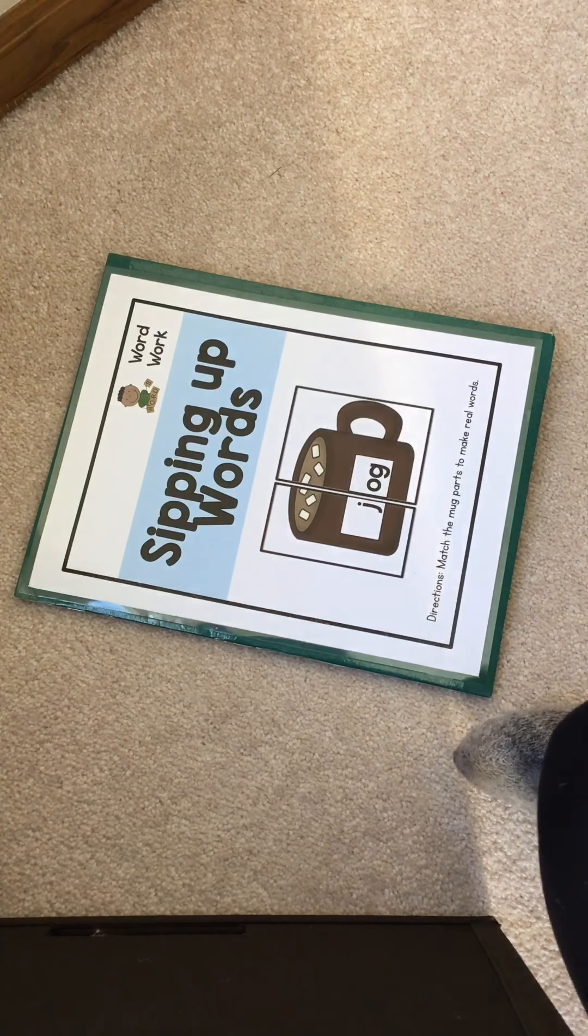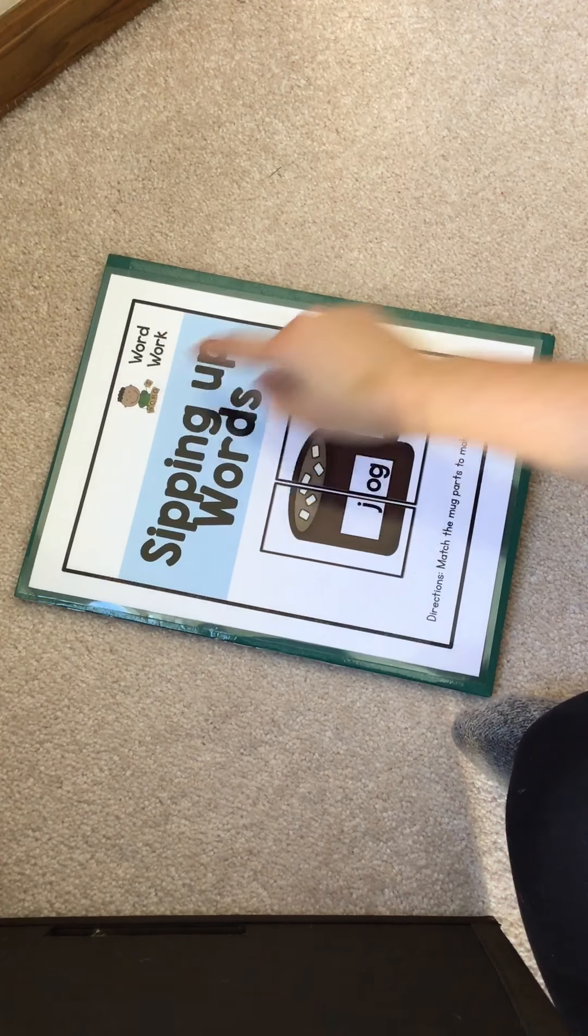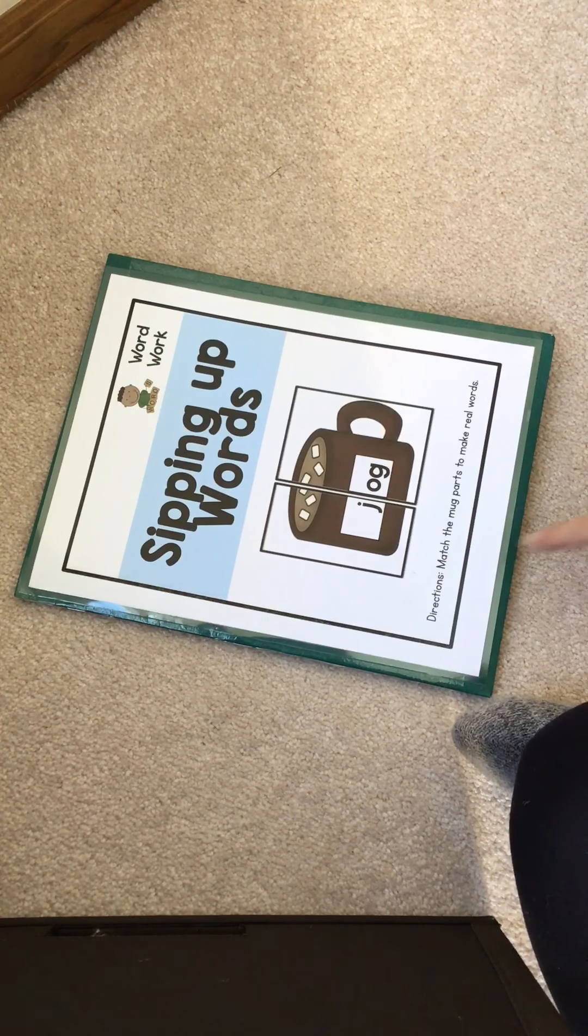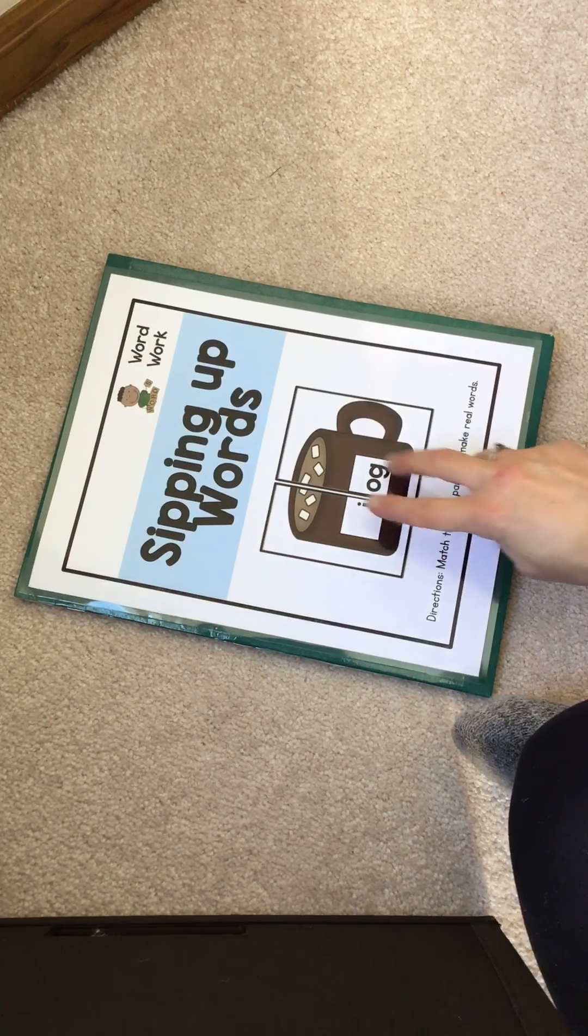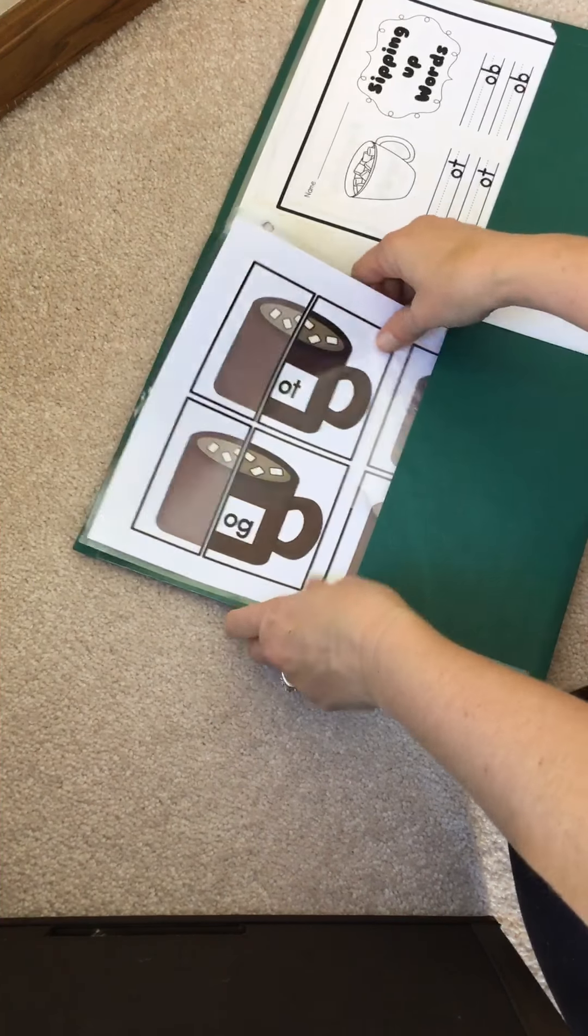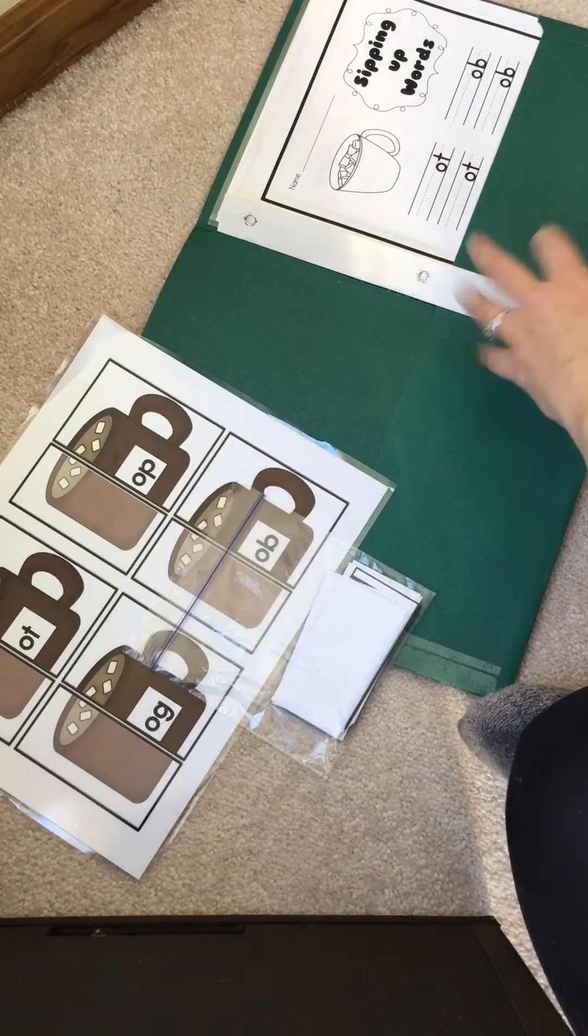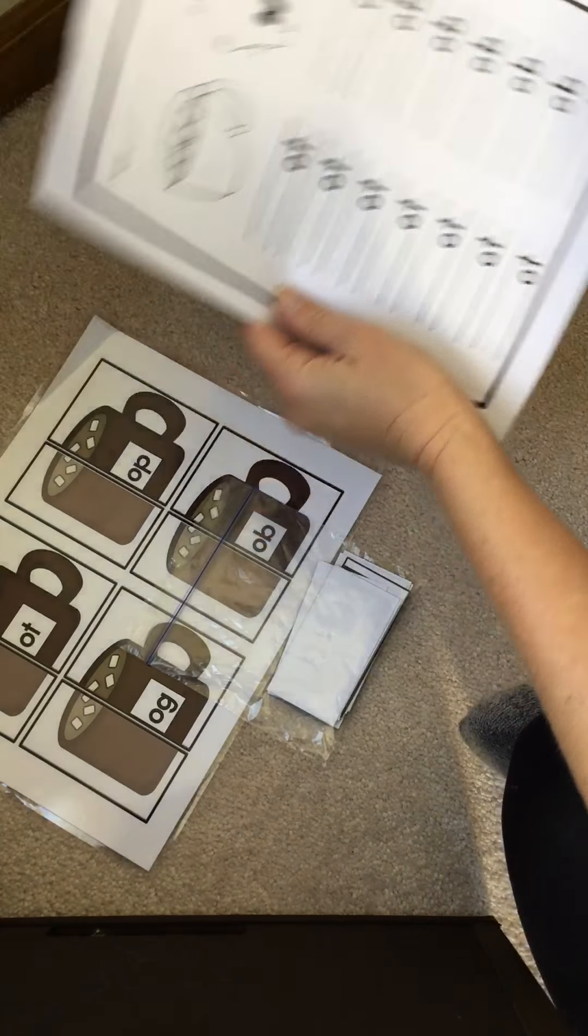Okay, this folder is called 'Sipping Up Words.' It goes in the word work bin with the boy with the tiles. The directions say match the mug parts to make real words, so it looks like we're making hot cocoa words. I'm going to take out my sorting mat and my cards and my worksheet.